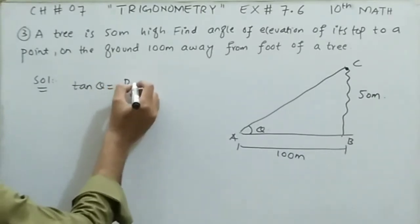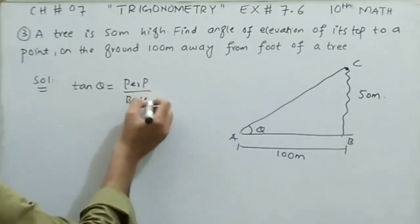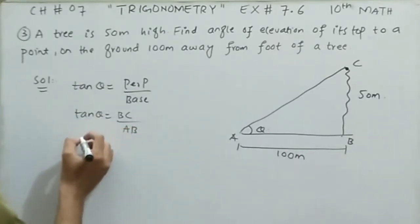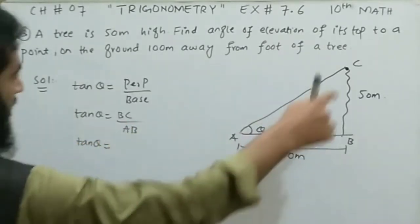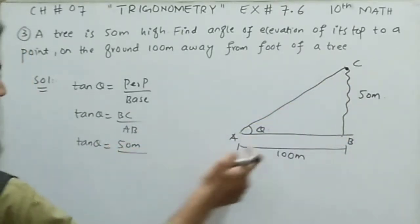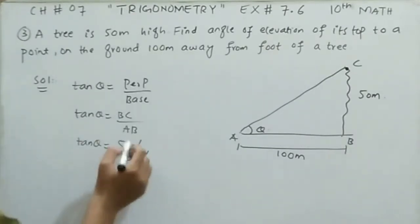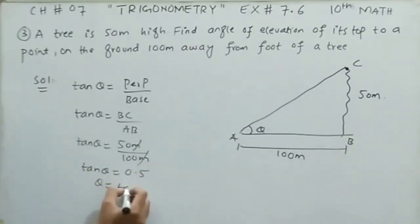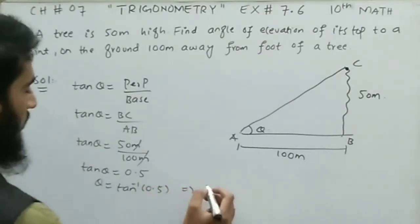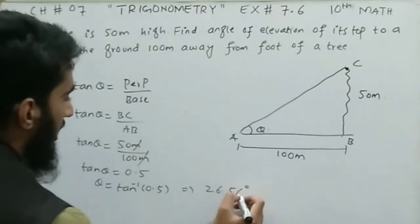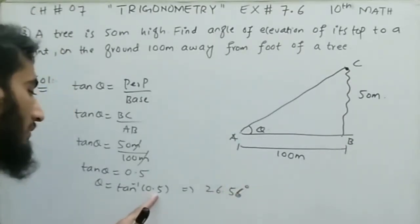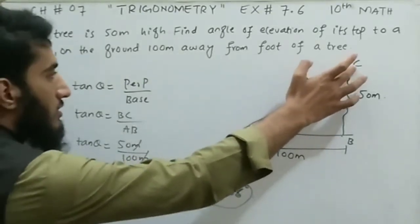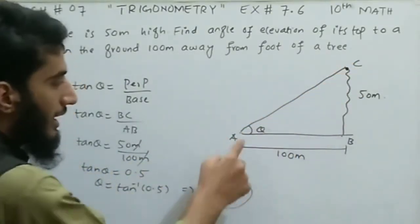According to the definition, tangent theta equals perpendicular divided by base. Tangent theta equals BC over AB. BC is 50 meters and AB is 100 meters. Meters cancel and 50 divided by 100 gives 0.50. Shifting tangent to the right-hand side: theta equals tangent inverse of 0.50. Putting this in the calculator gives 26.56 degrees — this is the required angle of elevation from the top of the tree to the ground point A.